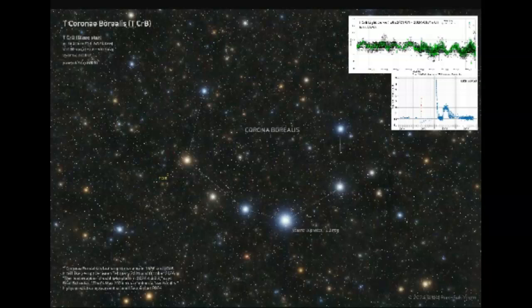T CrB is a recurrent nova. That means it erupts not just once, but over and over again. Its explosion in 1866 was the first nova astronomers had ever seen in detail. No one knew what caused it, said Schaefer. Another blast in 1946 established its period: 79 to 80 years.